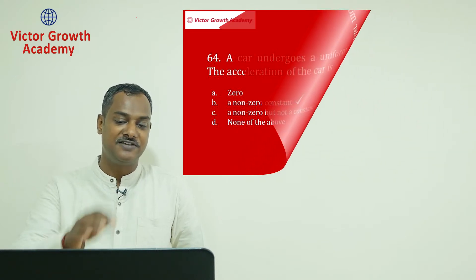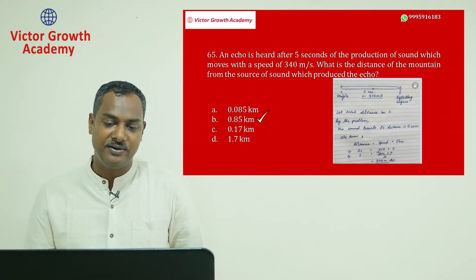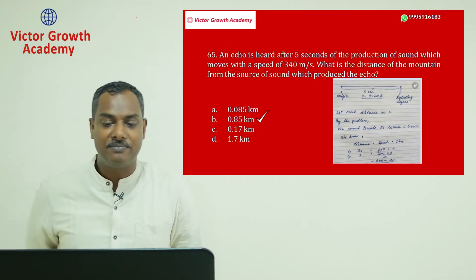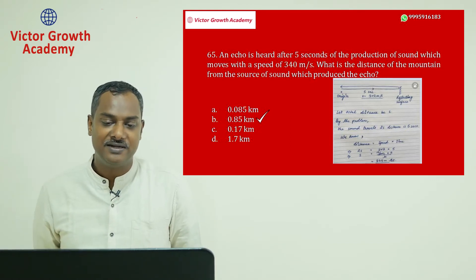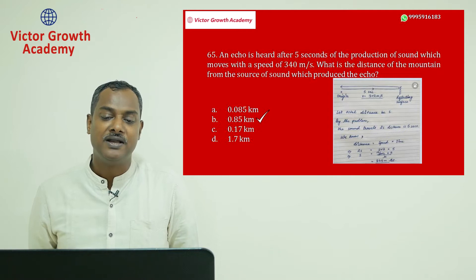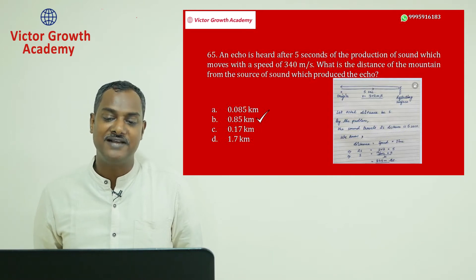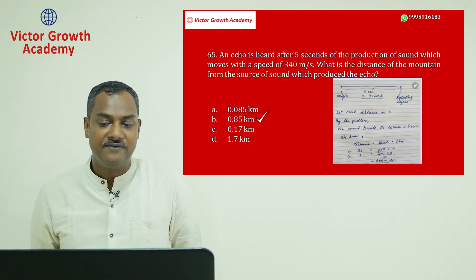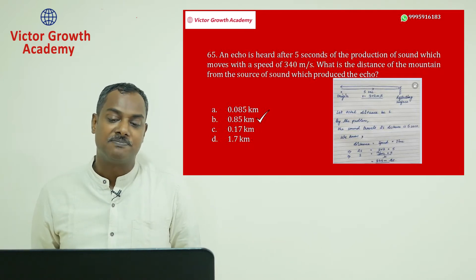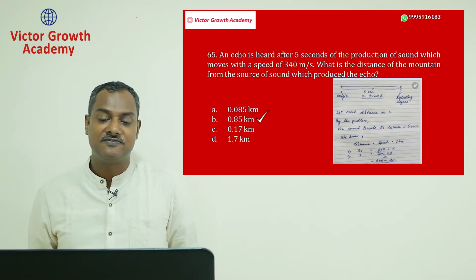Question number 65 is pure physics and you need proper preparation — reading from NCERT could have helped you. Question 65: an echo is heard after five seconds of production of sound, which moves at a speed of 340 meters per second. What is the distance of the mountain from the source of sound?